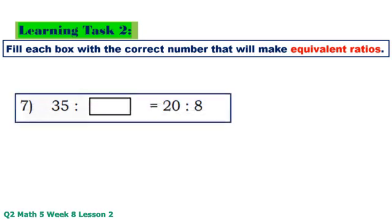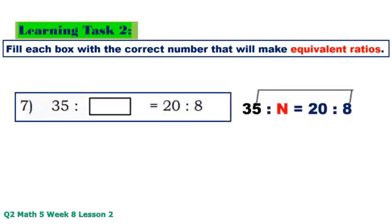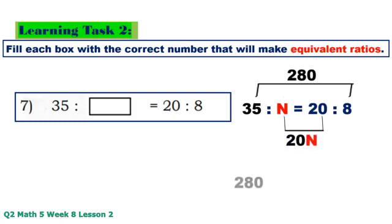Number 7: 35 times 8 equals 280, N times 20 equals 20N. 280 divided by 20 equals 14.